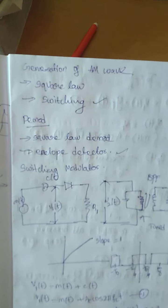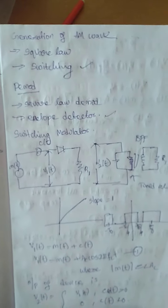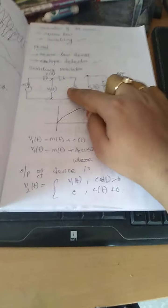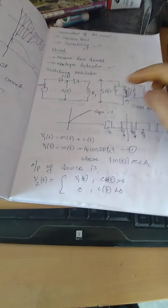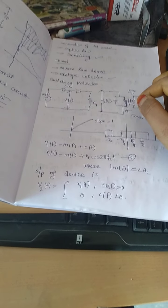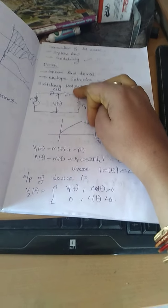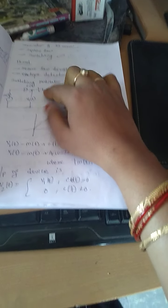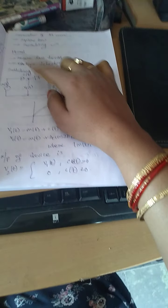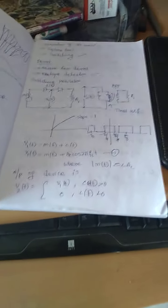Now we will see the basic function. When you are sending an input signal, a semiconductor diode is used as an ideal switch to which the carrier c(t) and message m(t) are simultaneously applied. We assume that c(t) applied to the diode is of large amplitude. We will see what happens to the message signal in that case.